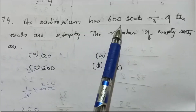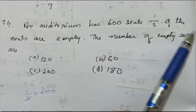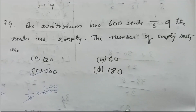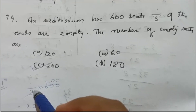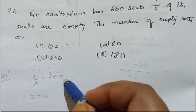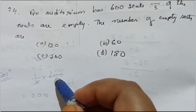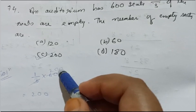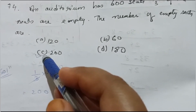The question is: a container has 600 seeds, and 1/3 of the seeds are empty. The number of empty seeds will be 1/3 into 600. We can cut — 3 twos are 6 — so that means 200. The answer will be 200.